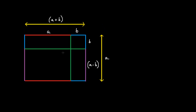Now let's name the individual areas contained within this rectangle. This area here is a times b, this area here is b squared, this area here is a multiplied by a minus b, and this area over here is b multiplied by a minus b.